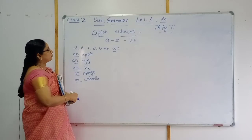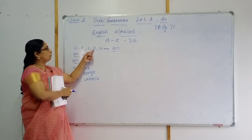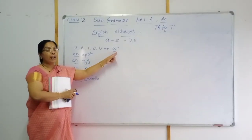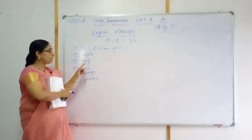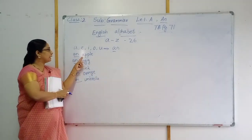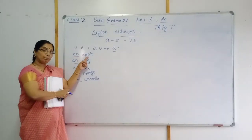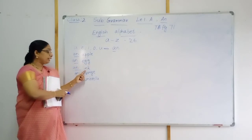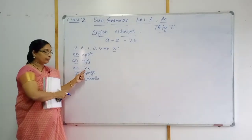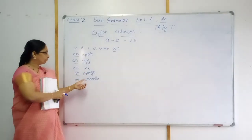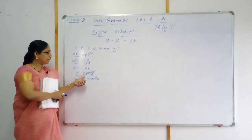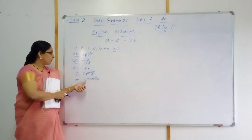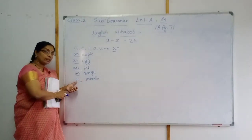You see, children, the speciality is: when A, E, I, O, U comes as the first letter, we should use AN. AN — A, N. For the examples: AN apple — first letter A, so AN apple. EGG — first letter E, so AN egg. ING — first letter I, so AN inch. O — first letter O, so AN orange. Umbrella — first letter U, so AN umbrella. These are the examples.